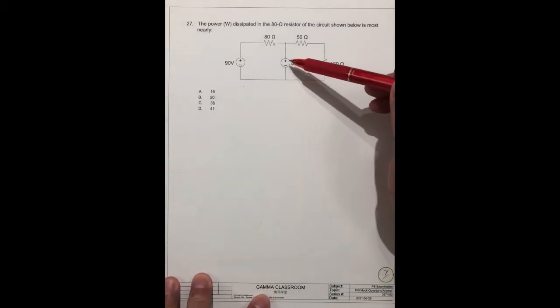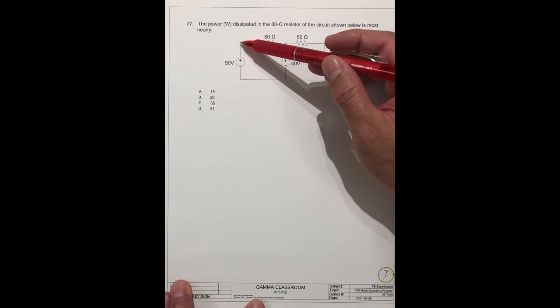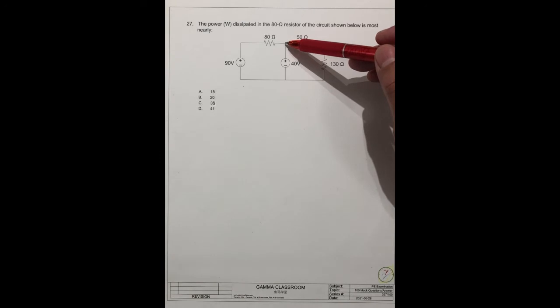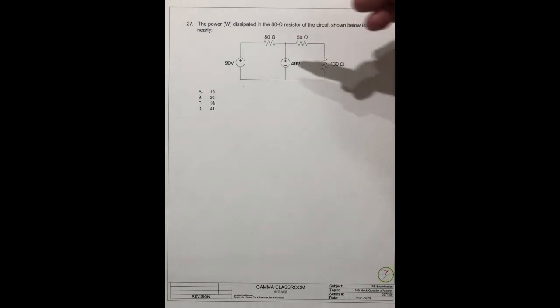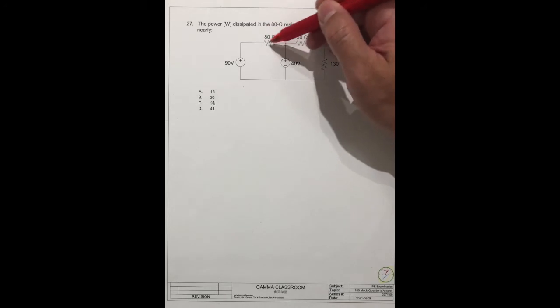In the circuit, we know this point, the voltage. We know this point also. We know this point voltage. So we can calculate the voltage across this resistor.